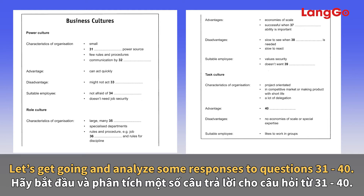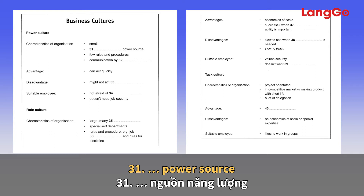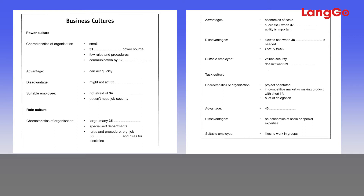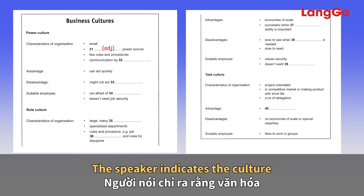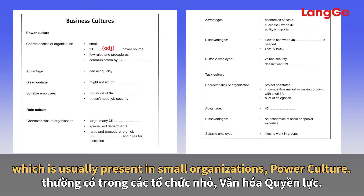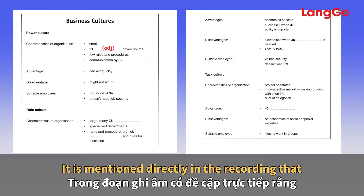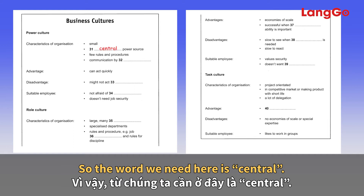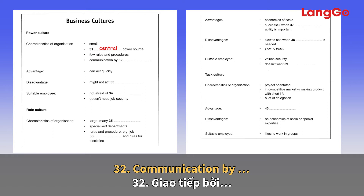Let's analyze some responses to questions 31 to 40. Question 31 — power source. The first type is called the power culture and it's usually found in small organizations. It needs a central source of power to be effective, and control is in the hands of just one or two people. The word to fill the gap must be an adjective, and since the culture needs a central source of power, the answer is 'central'.